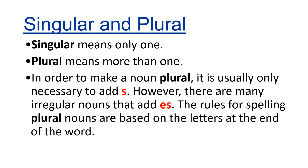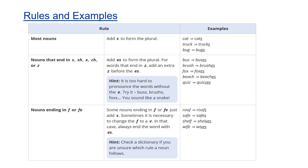In order to make a noun plural, it is usually only necessary to add the suffix S. However, there are many irregular nouns that add the suffix ES. The rules for spelling plural nouns are based on the letters at the end of the word. So let us see how we follow the rules with certain examples.